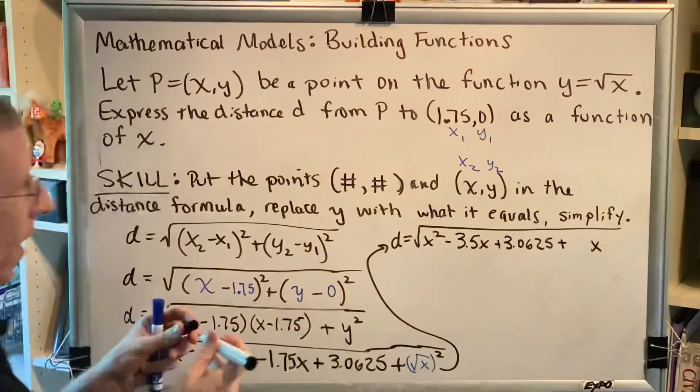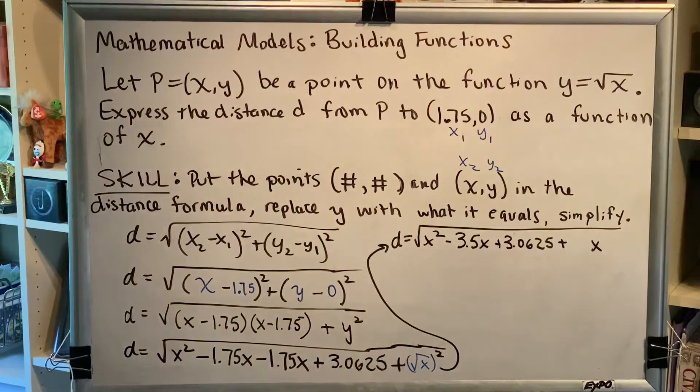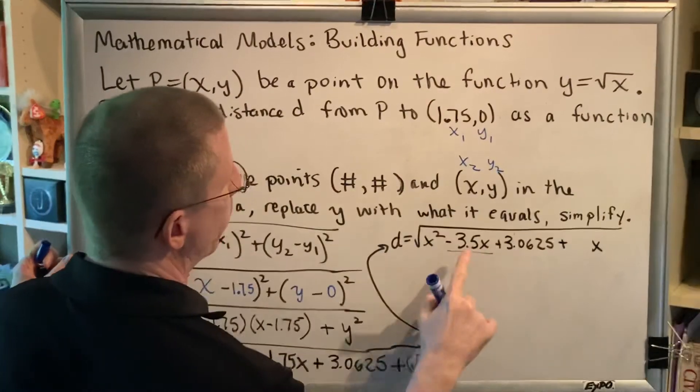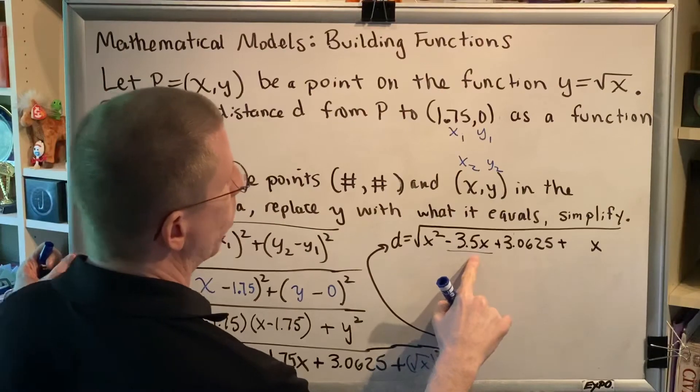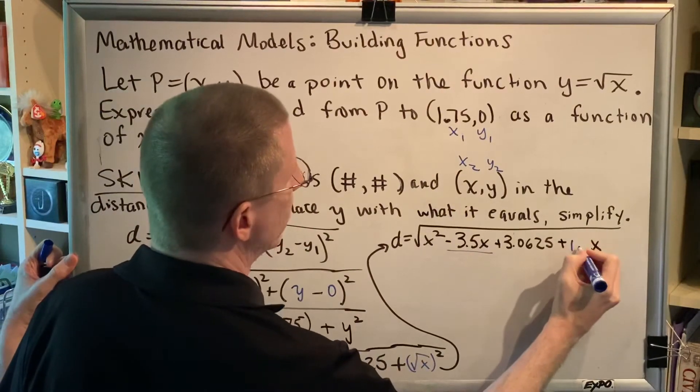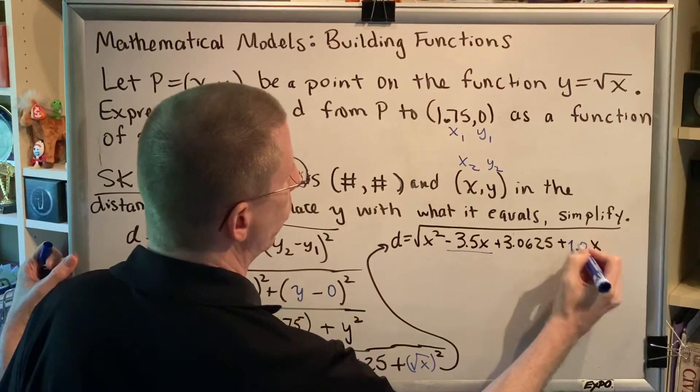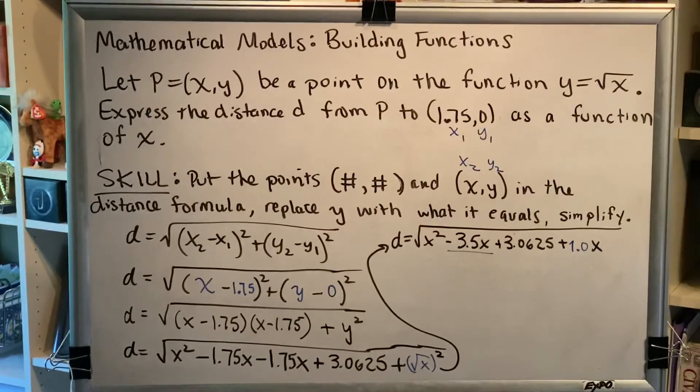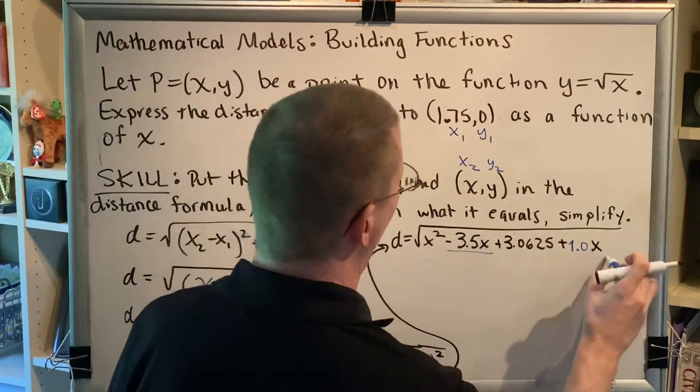Now I could just write x, but I'm not. And the reason why is because I want to be able to combine it with this other like term in the next step. This is a decimal with one decimal place. So I'm going to write x as a decimal valued coefficient with one decimal place. I'm going to write it as 1.0x. 1.0x is the same as just x. But this helps me know how to put these together.